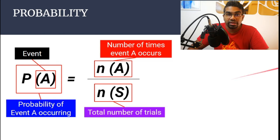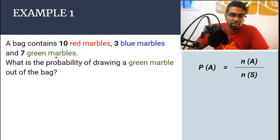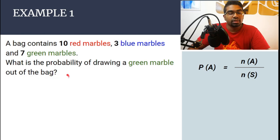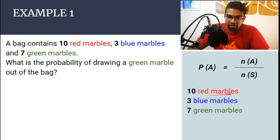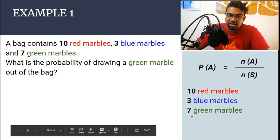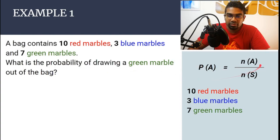Let's look at it through an example. A bag contains 10 red marbles, 3 blue marbles, and 7 green marbles. What is the probability of drawing a green marble out of the bag? First, before we start, we always need to write down the information given to us. So here we have 10 red marbles, 3 blue marbles, and 7 green marbles. Let's get to using the formula.